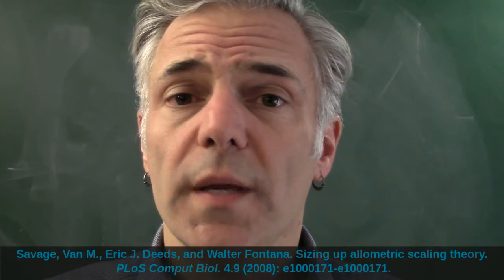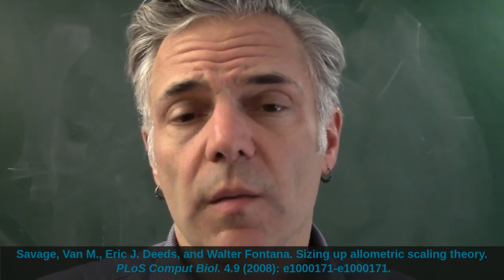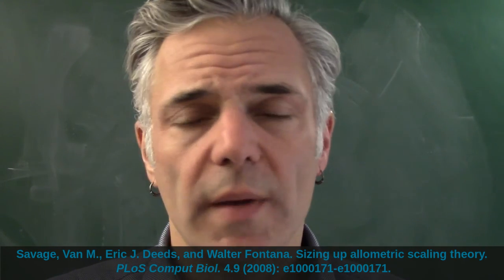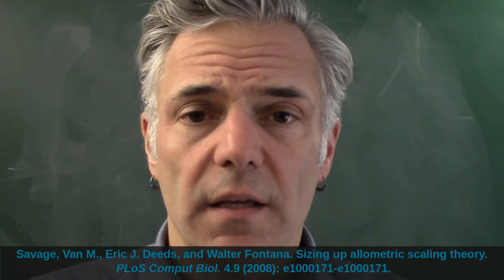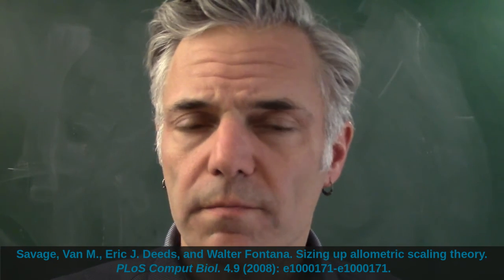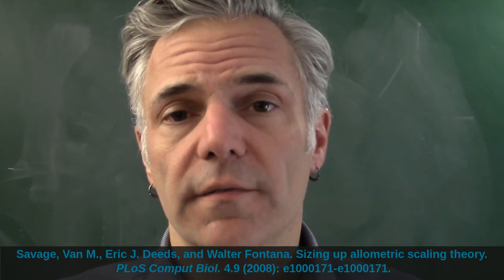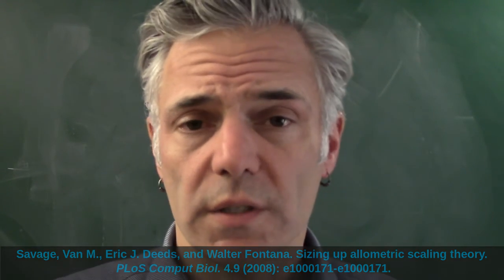There's a review paper from 2008 by Savage, Deeds and Fontana, Sizing Up Allometric Scaling Theory. And that is, I think, a very clear and sort of balanced overview of the West Brown-Enquist theory. It's fairly technical but also fairly clear and could be a good place to start, both to learn some of the mathematical details and learn about some of the strengths and limitations of the theory.